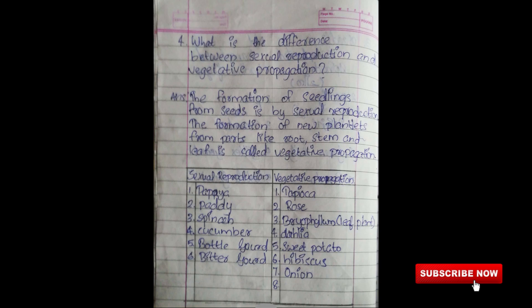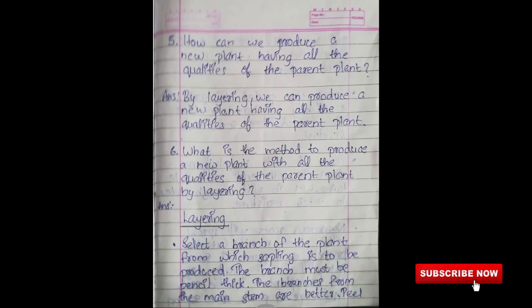Table: Sexual reproduction — papaya, paddy, spinach, cucumber, bottle gourd, bitter gourd. Vegetative propagation — tapioca, rose, bryophyllum, dahlia, sweet potato, hibiscus, and onion.